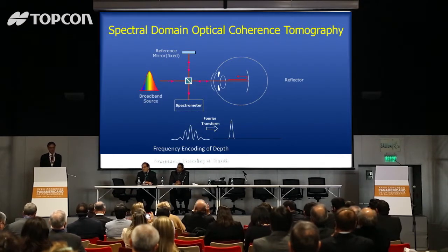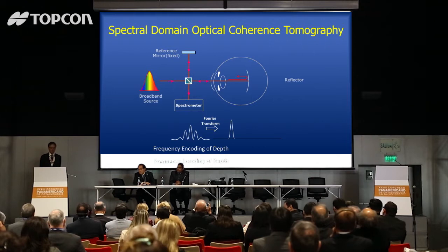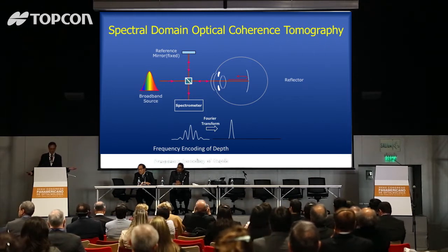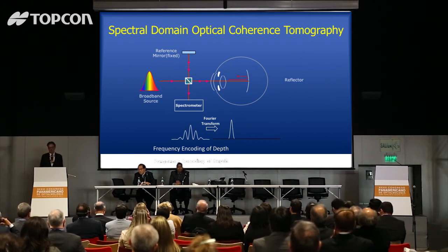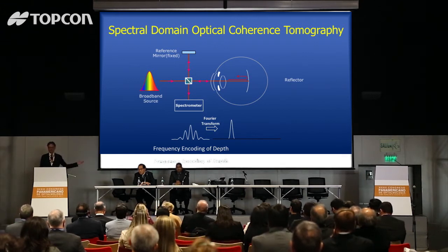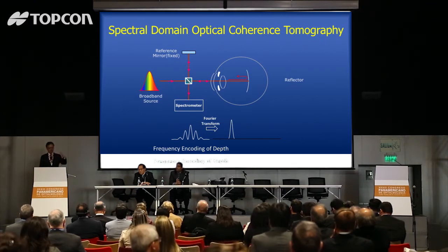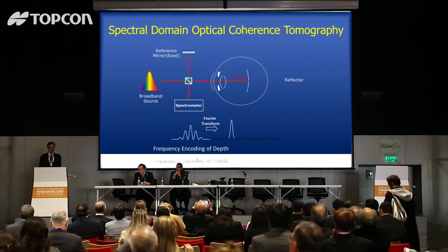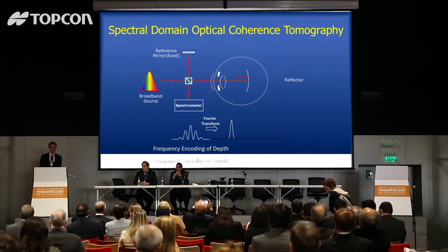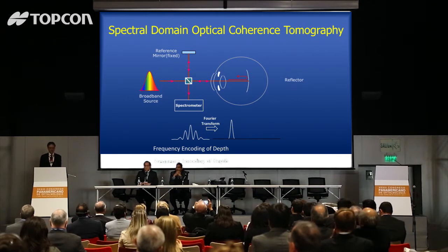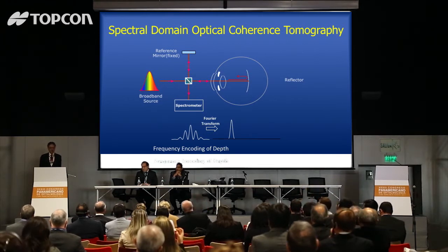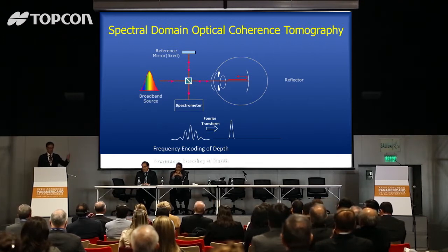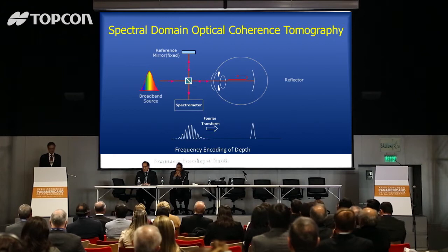With spectral domain OCT, the light source is fairly broadband. It sends a bucket full of wavelengths into the eye. Part of the light is split by a beam splitter to go to a reference arm, and part goes into the eye. Depending on what reflects in the eye, you get a certain amount of reflection back. Those are combined with the light from the reference arm and you get an interferogram.